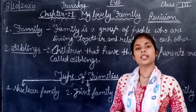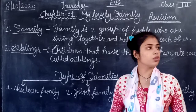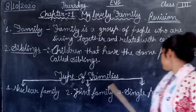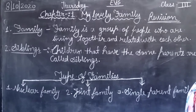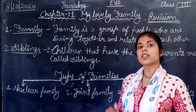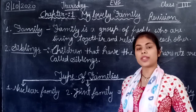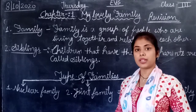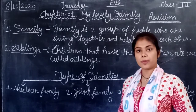For joint family, uncle and other kinds of relatives — all kinds of parents — are part of the joint family. And single parent family — either a father or mother alone — that is what we call single parent family.